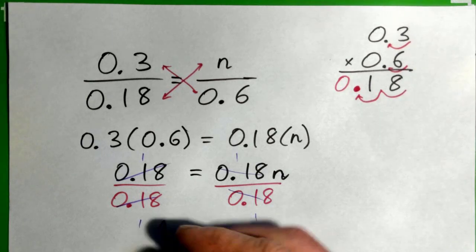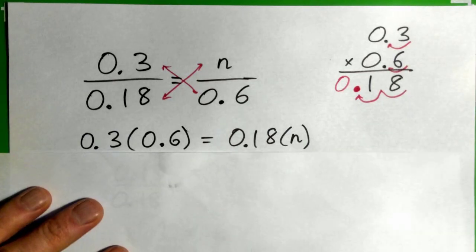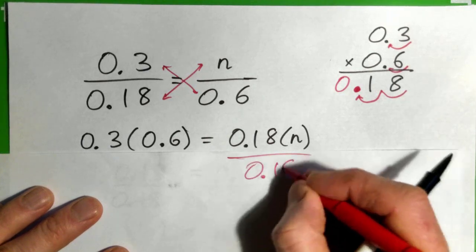So that's the answer, n equals 1, right? And you know, some students prefer at this point to divide by 0.18. That's perfectly fine. You can do that.